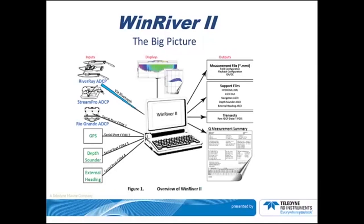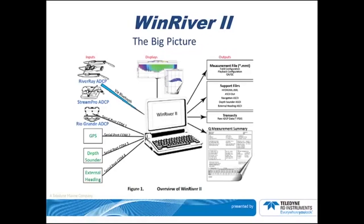In the top middle, we show that Wind River 2 has displays — in fact, a wide variety, including profile displays and contour and tabular displays. On the top right, we show the concept of a measurement file. Wind River 2 saves all data — including configuration, test results, compass calibration, and reports — in a measurement, so you can go back at any time and look at any and all aspects of the measurement.